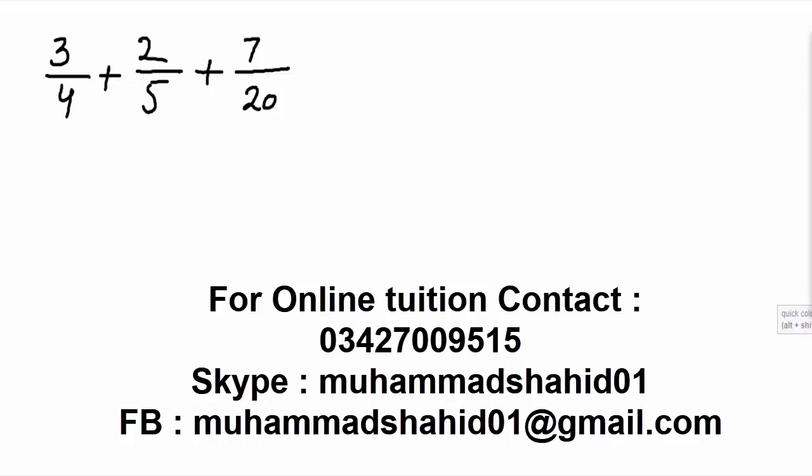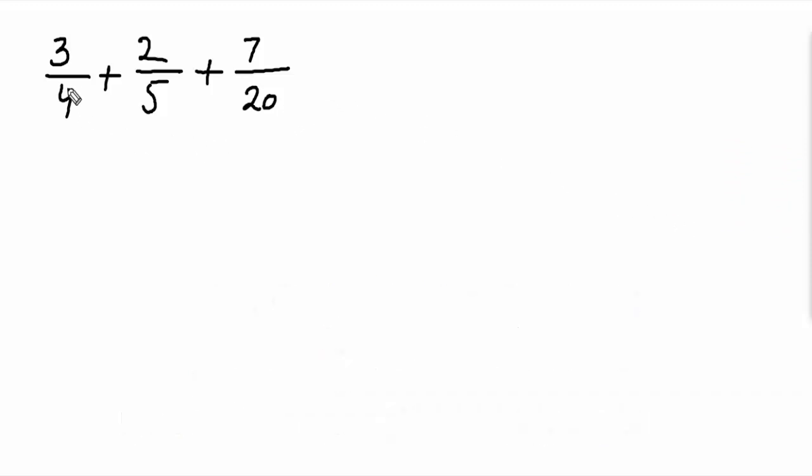If you find any problem after watching this video, you can comment and I will try to resolve your problem. So let's start. First of all, you have to see the denominator of the first fraction is 4, the second fraction denominator is 5, and the third fraction denominator is 20. You can see that 20 is the biggest number among these.